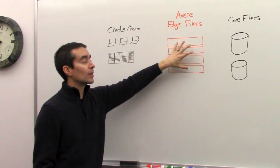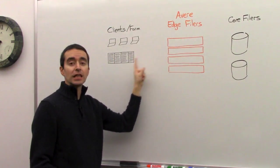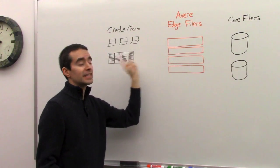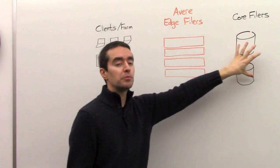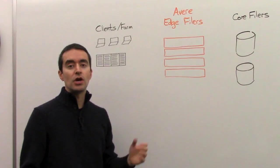So what we do is we introduce our edge filers to be able to provide a low latent link to that data so clients can read and write as quickly as possible to the Avir and then Avir can push that data back to the core filers whenever it's needed.